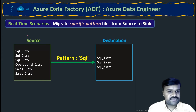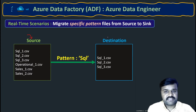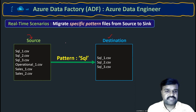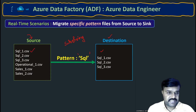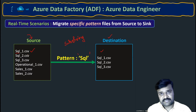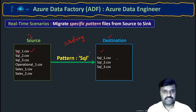In the source, assume we have a set of files, and in the destination we want to copy those files. The specific pattern here is a substring pattern — we mention a specific substring, and whichever file name contains that particular substring, those files only we need in the output, i.e., in the destination location.